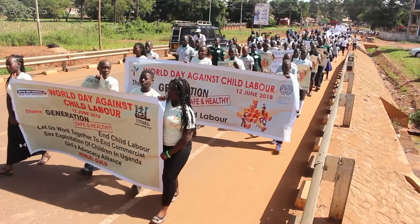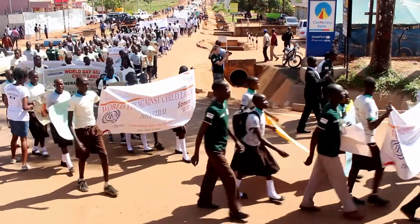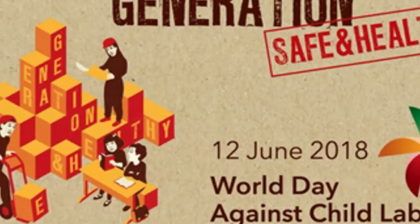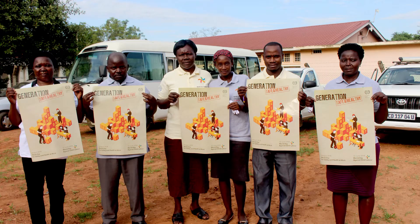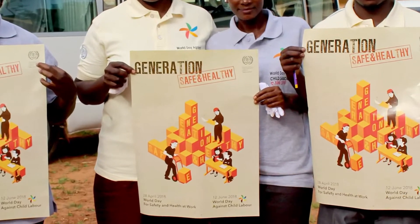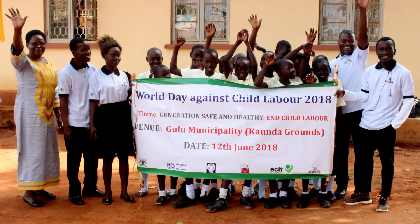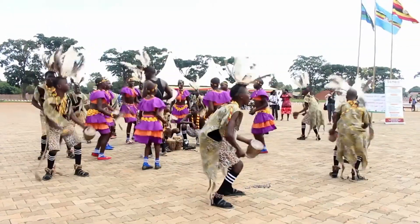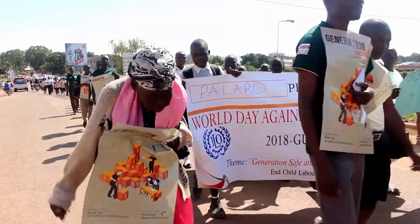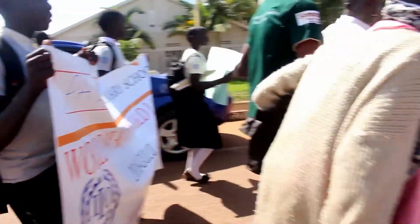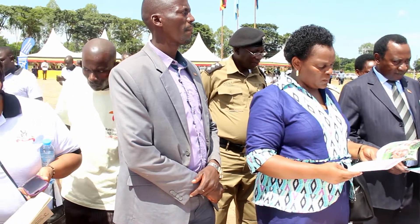On 12th June 2018, Uganda joined the rest of the world to commemorate World Day Against Child Labour under the theme 'Generations Safe and Healthy and Free from Child Labour.' The commemoration was an opportunity to raise awareness about the child labour problem and to take stock of the progress of interventions, existing opportunities and challenges that need to be overcome to stop child labour.